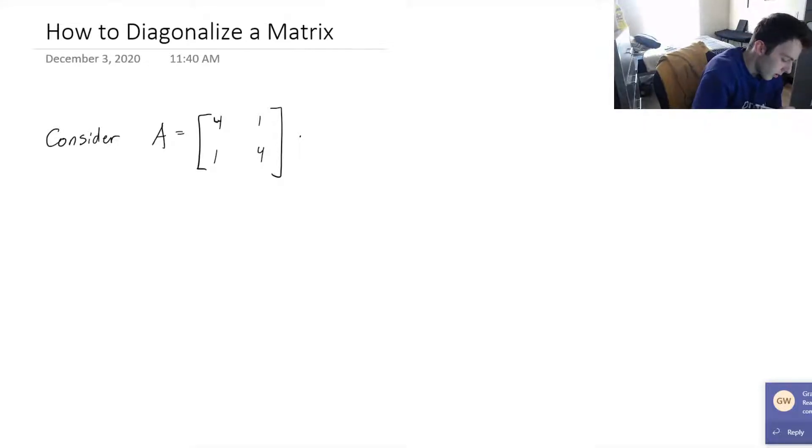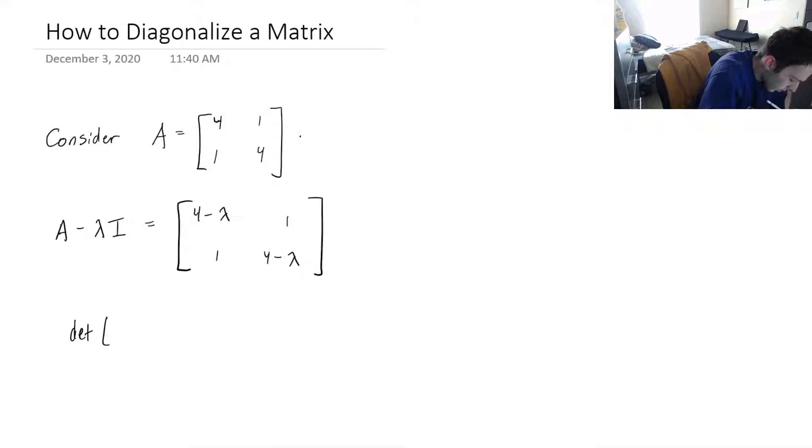So first thing is first, let's compute A minus lambda I. This will be 4 minus lambda, 4 minus lambda, 1, 1, and then we're going to compute the determinant of that matrix. This is our characteristic polynomial.